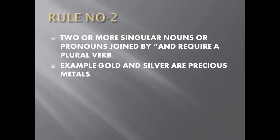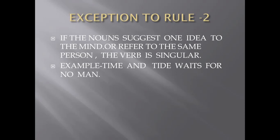Now let us discuss the second rule. The second rule says: two or more singular nouns or pronouns joined by 'and' require a plural verb. If we have two subjects in a sentence joined by the word 'and', then the sentence will take a plural verb. For example: 'Gold and silver are precious metals.'